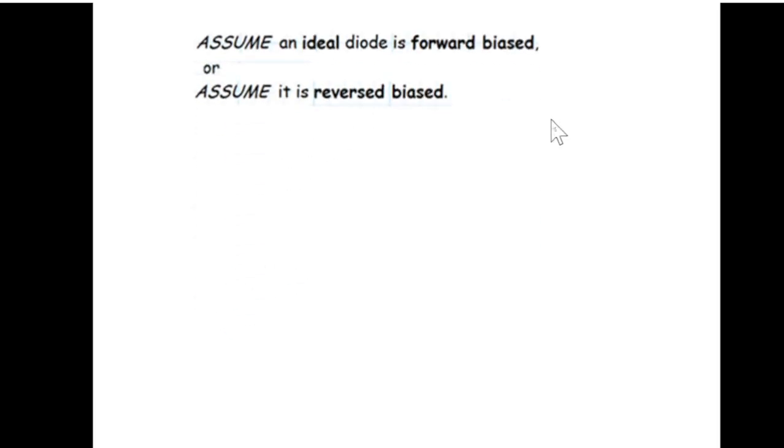Couple of things that we have to remember: assume an ideal diode is forward biased or assume it is reverse biased. So we either assume it to be forward or reverse and then proceed.